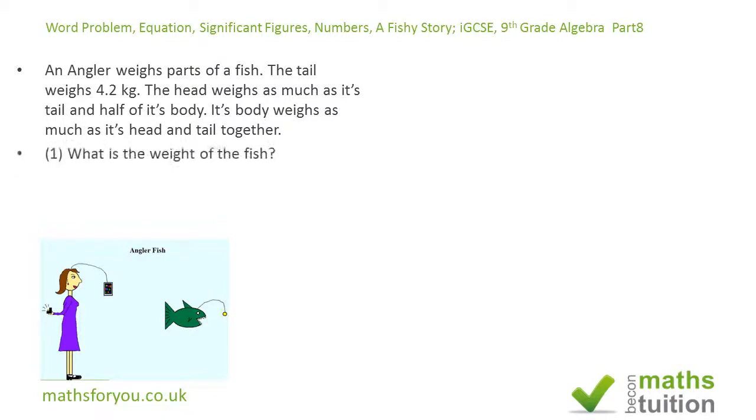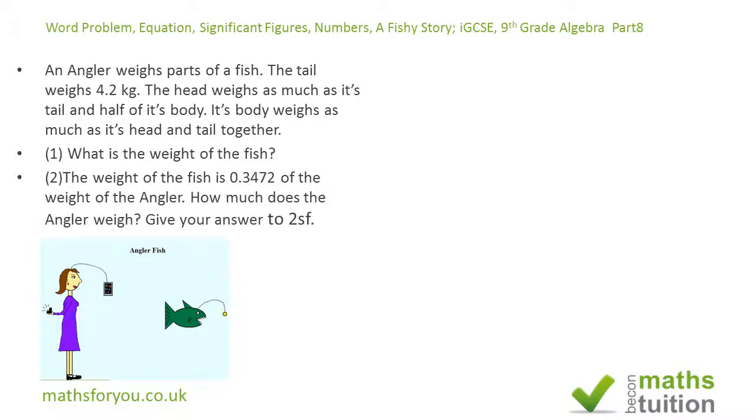As you would expect, the first question says what is the weight of the fish. Question number two says the weight of the fish is 0.3472 of the weight of the angler, how much does the angler weigh, and give your answer to 2 significant figures.